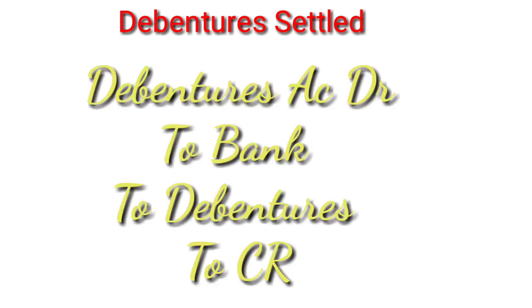The second important adjustment is debentures settled. This adjustment has always been asked in the exam. You have to keep your attention on the debenture holders. The entry is: Debentures Account debit to Bank, and the balance to Capital Reduction (CR).